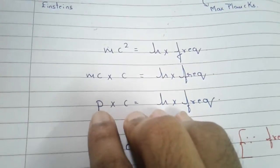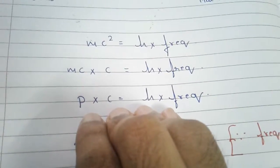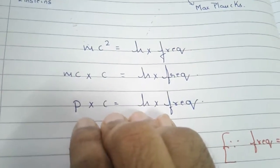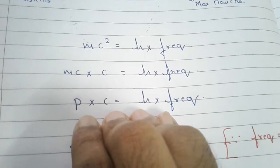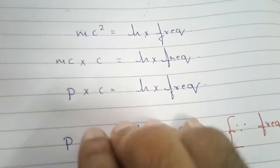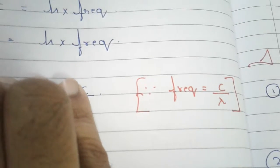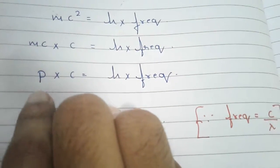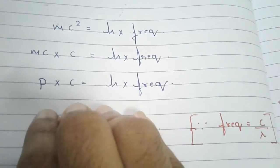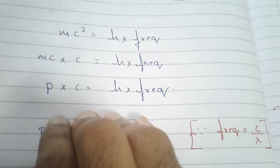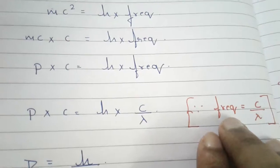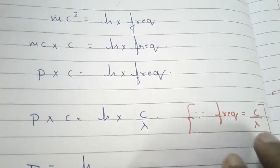So momentum times the velocity of light equals h times frequency. Now, frequency can also be written as c divided by lambda. So momentum times c equals h times c divided by lambda — instead of frequency, he substituted c by lambda, since frequency equals c divided by lambda. Basically what this equation means is that the greater the frequency, the smaller the wavelength.